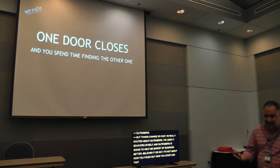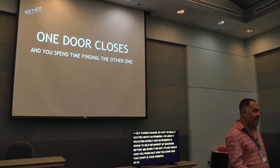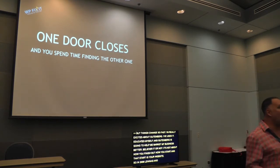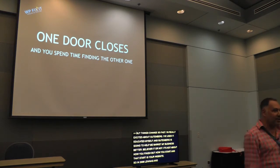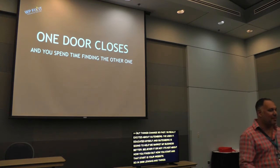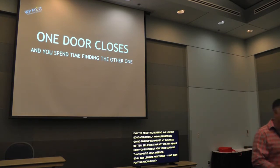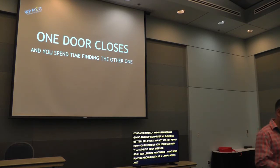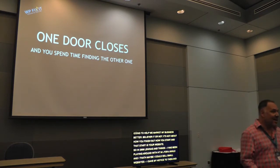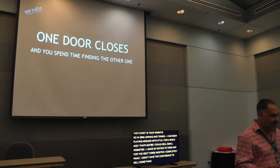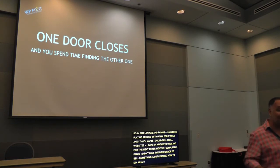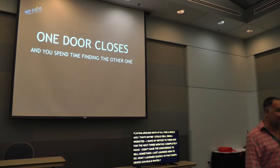In 2006, Linens and Things was purchased by a private equity firm with one goal in mind: liquidate all inventory and file bankruptcy. Luckily, I had seen the writing on the wall, so I began to think about what I was going to do next. I had been playing around with HTML and CSS for a while and thought maybe I could sell websites to small business owners. I gave my notice to Linens and Things, and for the next three months I completely panicked — I didn't have the confidence to sell something I had just learned to do.